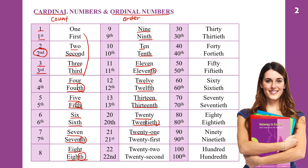Then 21 and 21st, 22 and 22nd, 23 and 23rd. Continuing on: 30th, 40th, 41 and 41st, 42 and 42nd, 43 and 43rd.